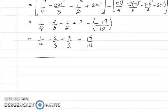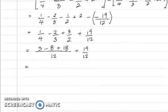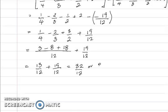The LCM is 12. 4 into 12 is 3, times 1 is 3. 3 into 12 is 4, times 2 is 8. 2 into 12 is 6, times 3 is 18. Plus 19 over 12. So minus 8 plus 18 is 10, plus 3 is 13, giving 13 over 12. Adding 19 over 12 gives 32 over 12, or 8 over 3 — dividing both top and bottom by 4.